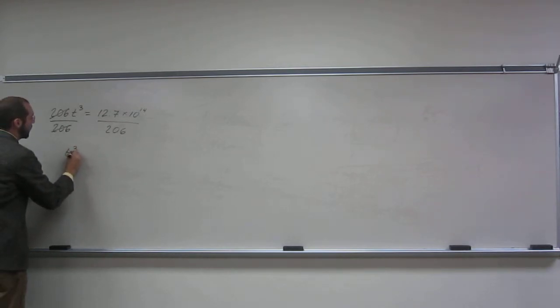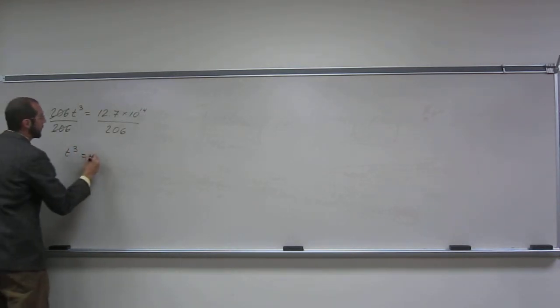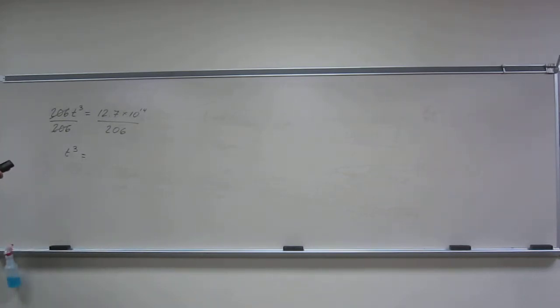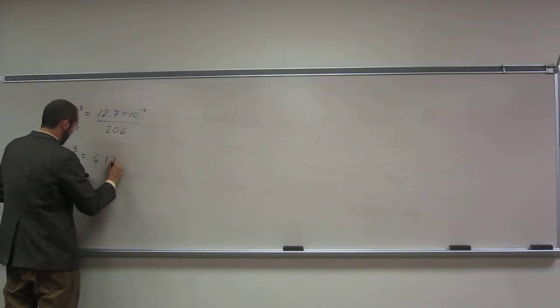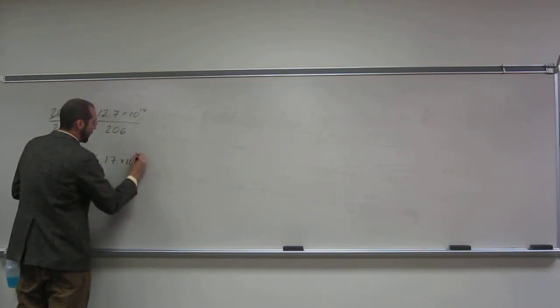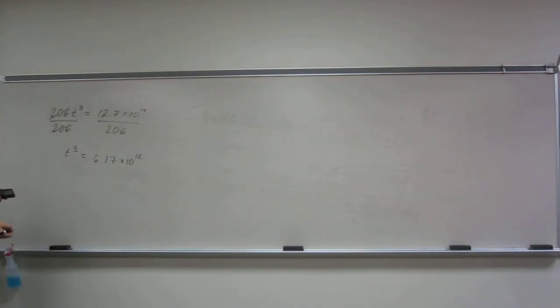So t cubed equals 12.7 times 10 to the 14. And that gives us 6.17 times 10 to the 14.